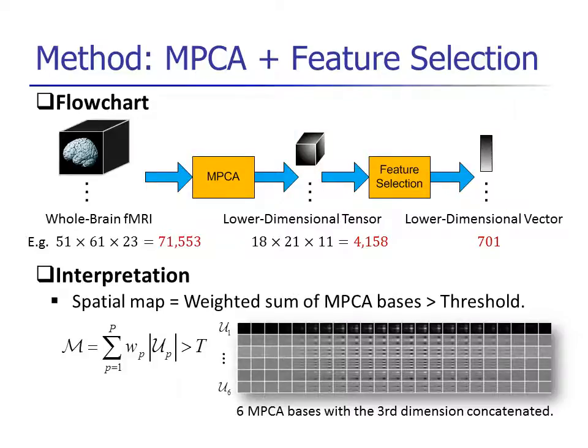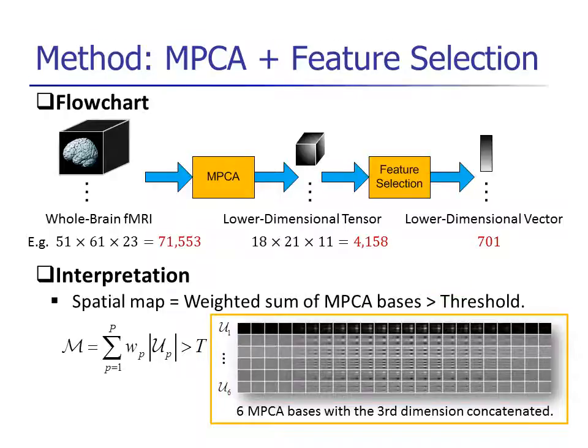For brain imaging, it is important to localize discriminating regions and interpret the features. Therefore, we construct a spatial map for interpretation by thresholding the weighted sum of MPCA bases. The figure on the bottom right illustrates six MPCA bases with a third dimension concatenated in a row.